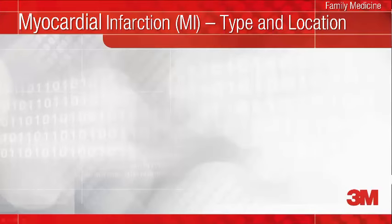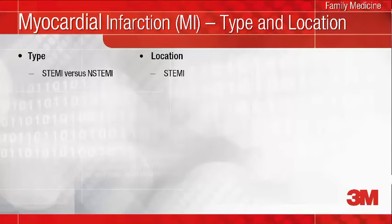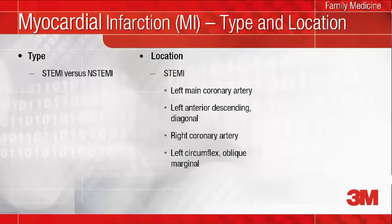As in ICD-9, ICD-10 classifies myocardial infarction by type, STEMI versus non-STEMI. New in ICD-10 is the ability to report the site or location of a STEMI by coronary artery affected. If at the same time of diagnosis you don't know which coronary artery is involved, document the suspected or possible anatomic site such as the anterior or inferior wall of the heart affected. Note that no additional documentation is needed for the location of a non-STEMI.